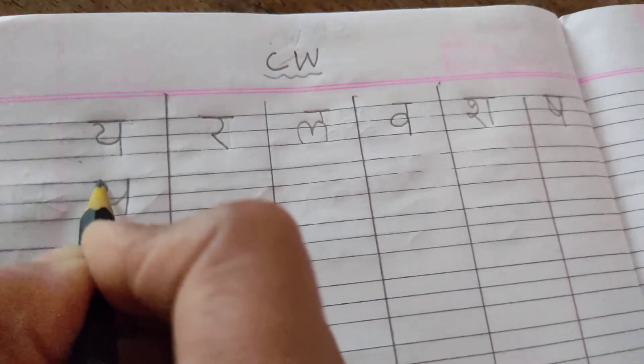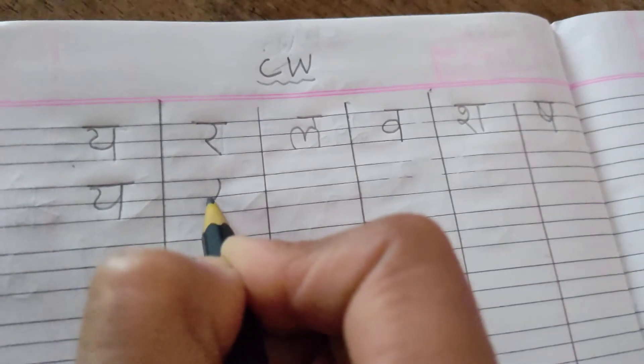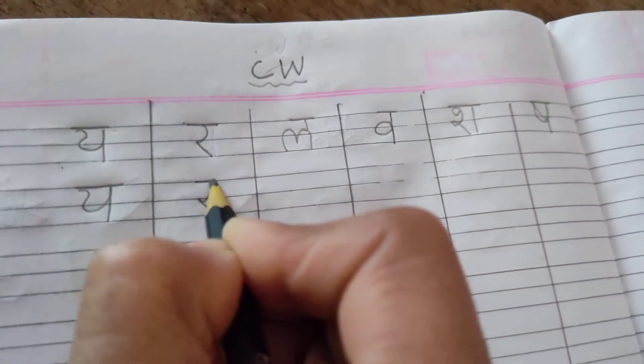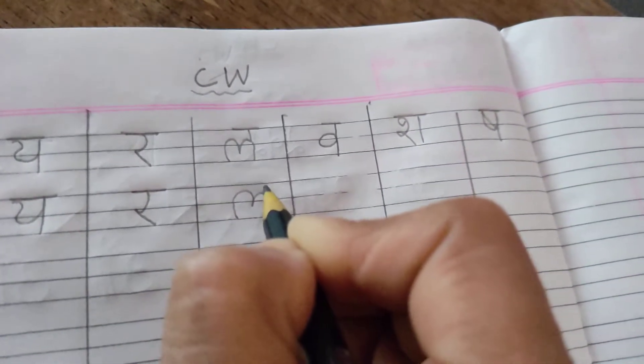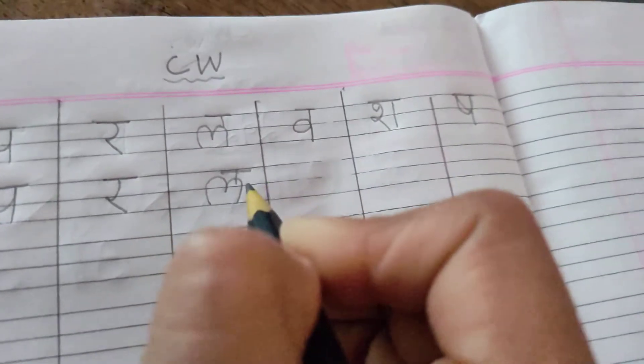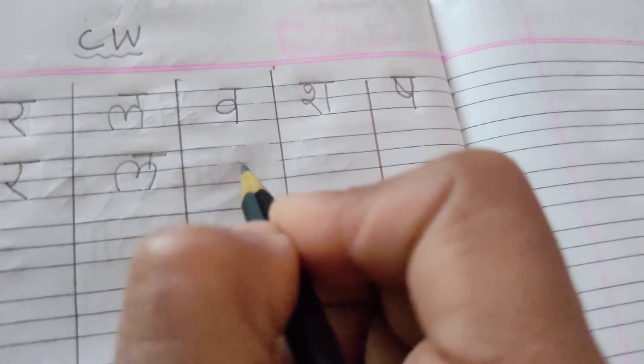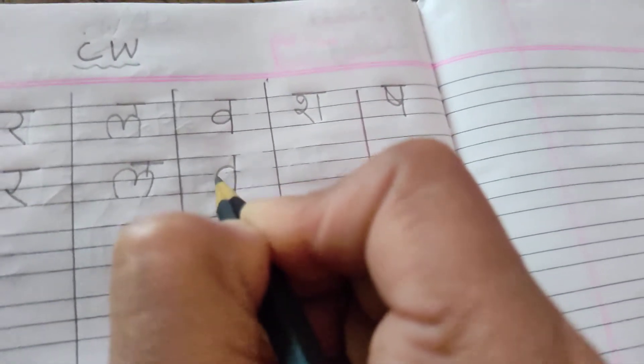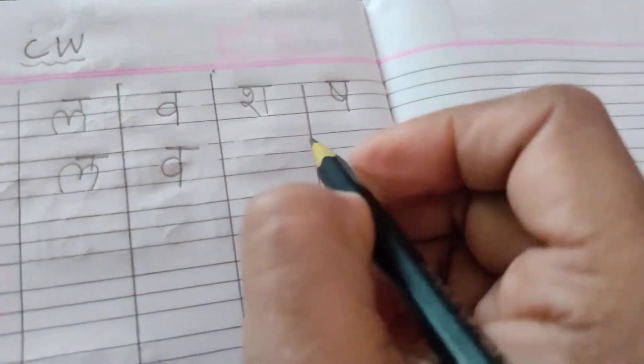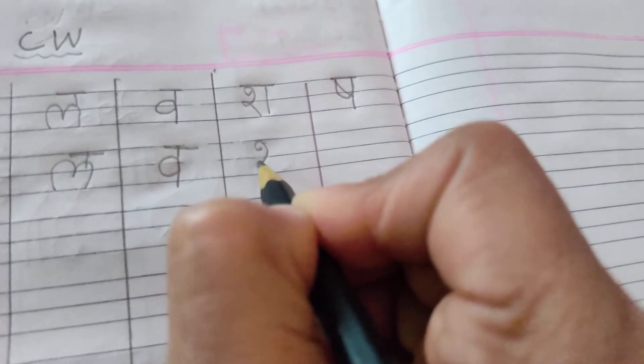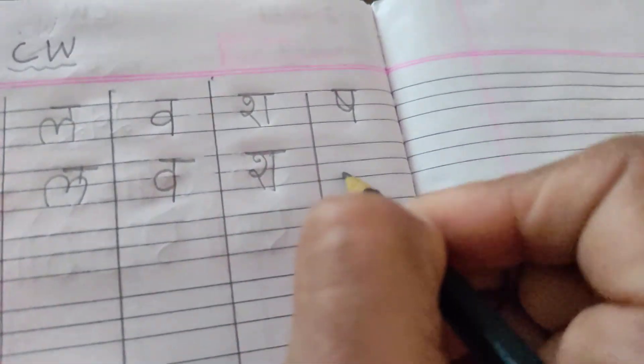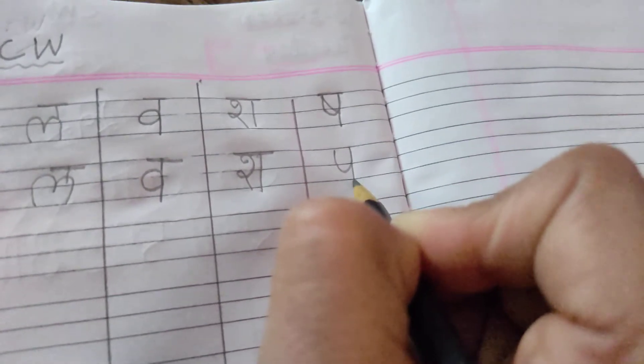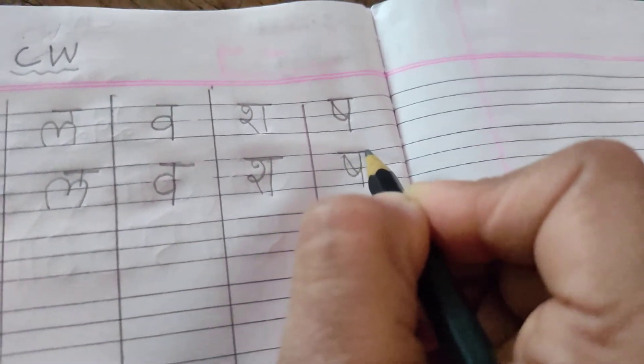YA say YATI, YA say YADNYA, RA say RATAR, LA, LA say LATAR TOO, LASOON, VA say VAKH. Next SHA. SHA say SHALGAM, SHARBAT. SH. SHA say SHAT BUJA. Okay, to complete this one. Next page, again you write down CW.